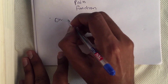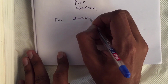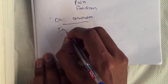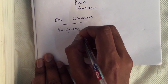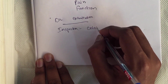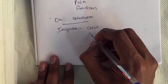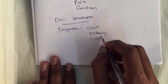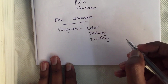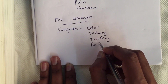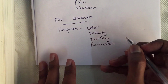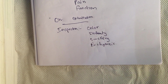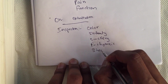On examination, there are things we should look out for. On inspection, we should look at the colour of the limb, check for any deformities, swelling, and ecchymosis. Ecchymosis is the discoloration of the skin due to bleeding underneath. We should also look for any shortening of the limb.